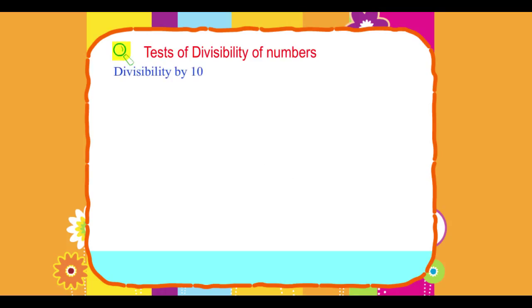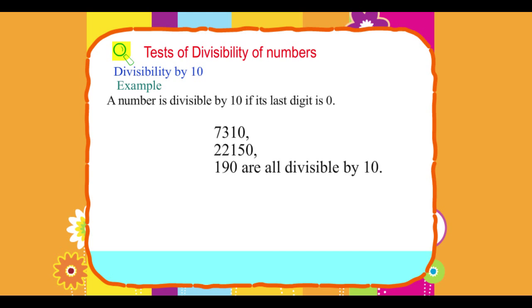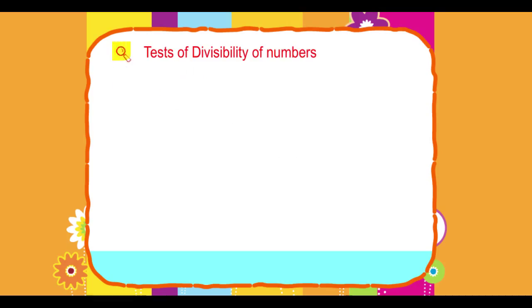Divisibility by 10: A number is divisible by 10 if its last digit is 0. Example: 731022150 and 190 are all divisible by 10.